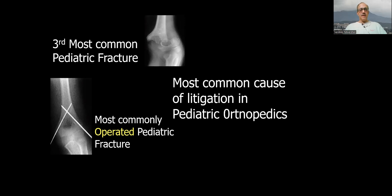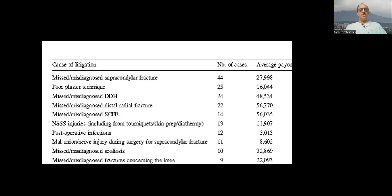It's also the most operated pediatric fracture. The common cause of litigation is missing or misdiagnosing it, or causing an iatrogenic ulnar nerve injury or malunion during surgery.